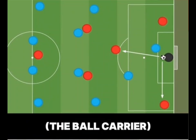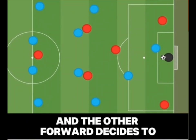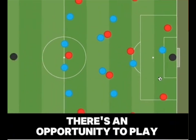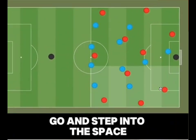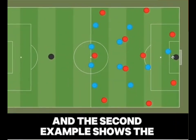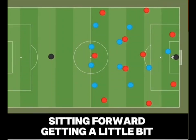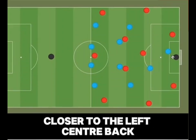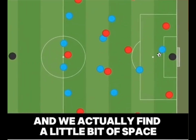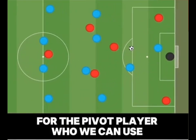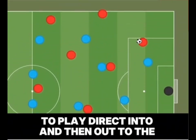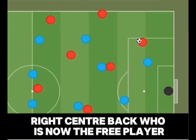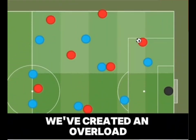Two examples of this are: if one of the forwards presses the goalkeeper, the ball carrier, and the other forward decides to sit on the pivot player, there's an opportunity to play into the left centre back who can then go and step into the space. The second example shows the sitting forward getting a little bit closer to the left centre back, and we actually find a little bit of space for the pivot player, who we can use as a bounce option for the goalkeeper to play directly into, and then out to the right centre back, who is now the free player.